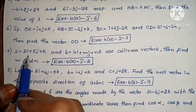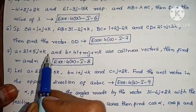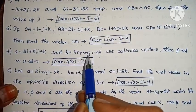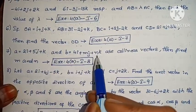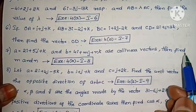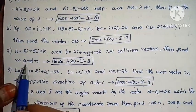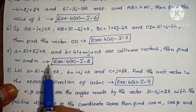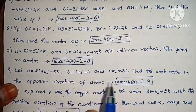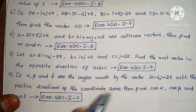Next: a equals to 2i + 5j + k and b equals to 4i + mj + nk are collinear vectors. Then find m and n. Exercise 4A, problem 8.